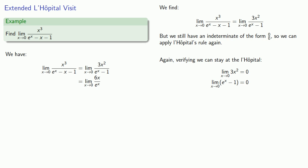Now it's important to recognize that we still have to evaluate a limit at some point. And this time, as x goes to 0, 6x goes to 0, and e to the x goes to 1. And so this limit can be evaluated directly.